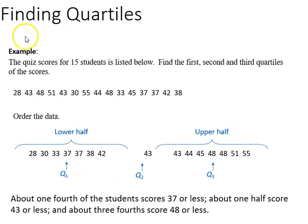The next step is to find quartiles. Here's an example. The quiz scores of 15 students are listed here, and we want to find the first, second, and third quartiles. In this case, we have to order the data from lowest to highest, then identify the lower half and the upper half.